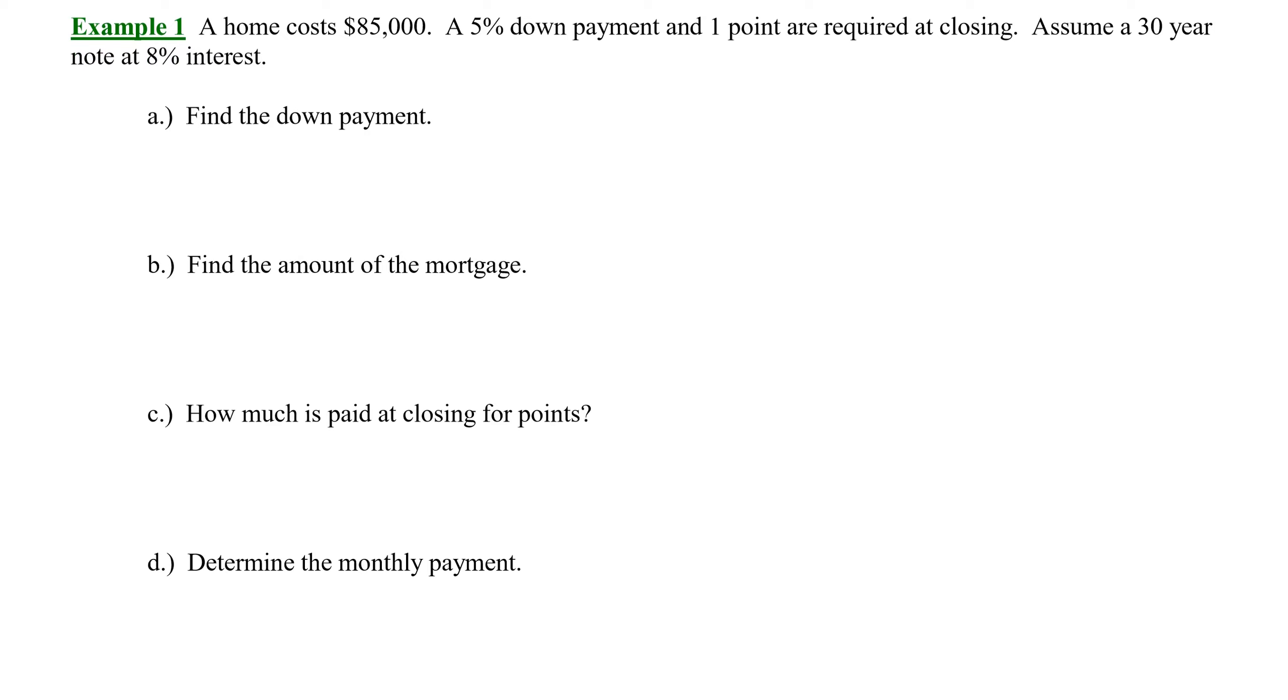Let's suppose that a home costs $85,000. A 5% down payment and 1 point are required at closing. Assume a 30-year note at 8% interest. So do notice this is a long-term loan, much longer than a car loan, which is anywhere between 2 and 6 years to possibly 8. This is a 30-year note. Also observe that there's some fees that we're going to have to pay at closing. That is up front at the point of sale. We have a 5% down payment and we have 1 point. Remember that's 1% of the loan amount which we pay to the lender. And our rate of interest for the loan is 8%.